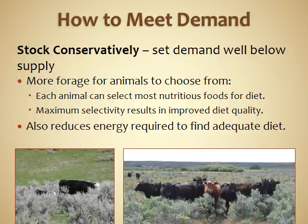Stocking conservatively is one way to help animals meet their demand. This sets demand well below supply on the landscape, so if there's more forage for animals to choose from, each animal can select the more nutritious foods in its diet. This selectivity allows them to have a higher quality diet and reduces the energy required to find adequate food. The less the animal travels, the less energy it expends. Stocking conservatively — giving each animal enough land to select the most nutritious plants — makes them more likely to meet their demand.